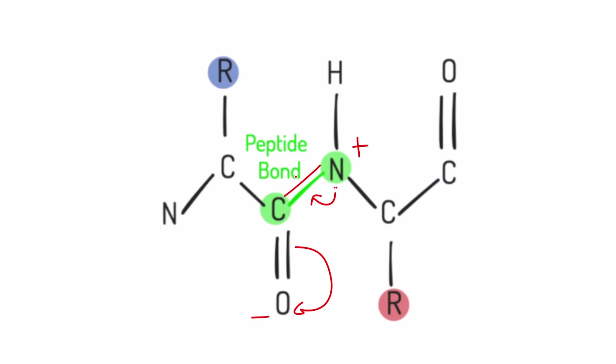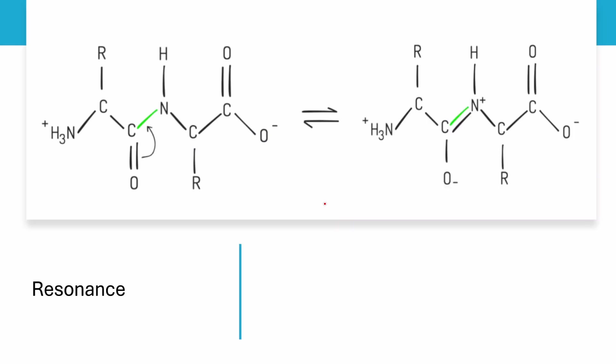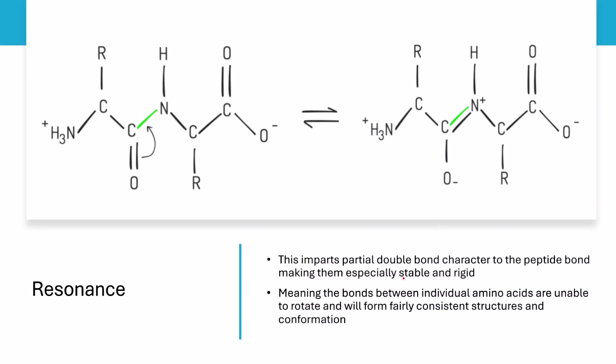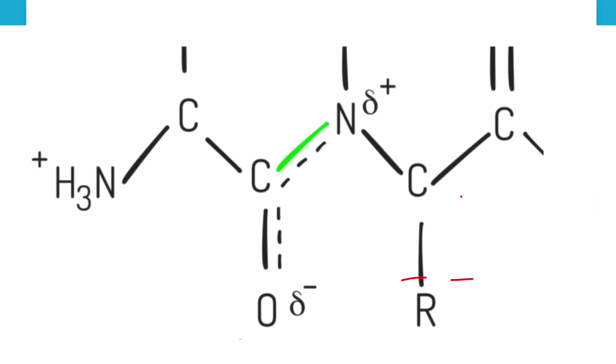As a result, nitrogen has a positive charge while oxygen has a negative charge. Due to this resonance, the peptide bond is not a single bond but has partial double bond character, which makes the peptide bond stable and rigid. A double bond cannot rotate, and since the peptide bond has partial double bond character, it becomes fixated in 3D space.